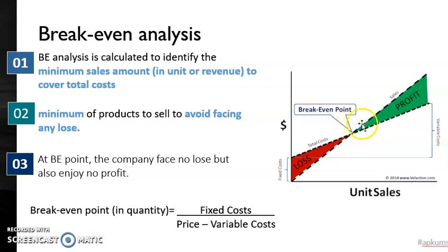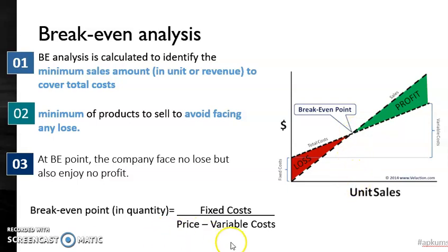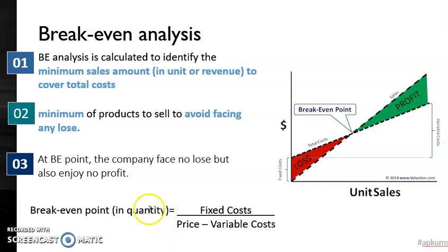Any company that wants to enjoy profit has to sell more units than the break-even point. We can also calculate the break-even point using this formula: break-even quantity equals fixed cost divided by price minus variable cost. This gives the quantity of units the company must sell to avoid facing any loss.